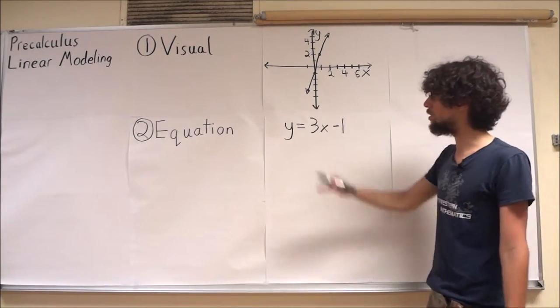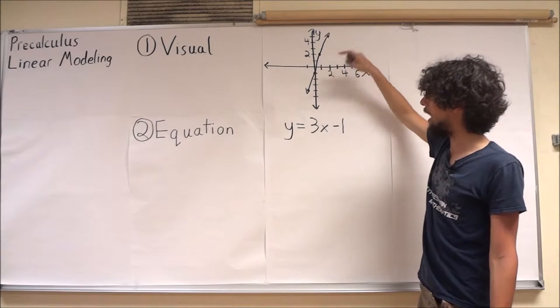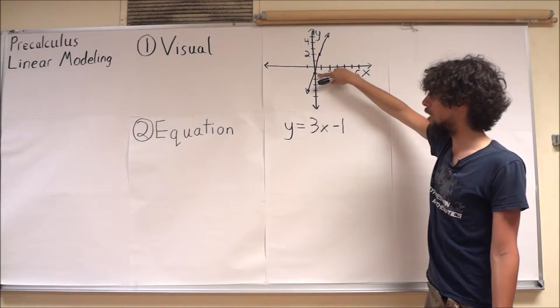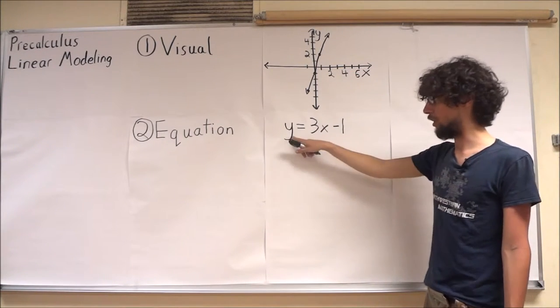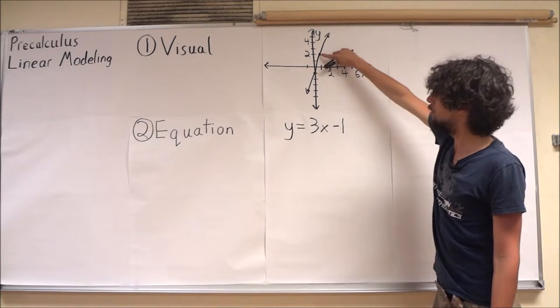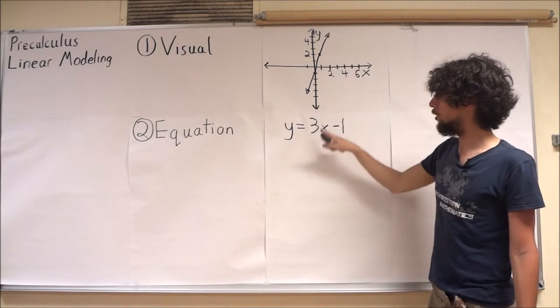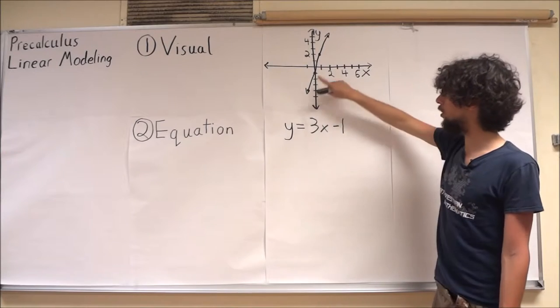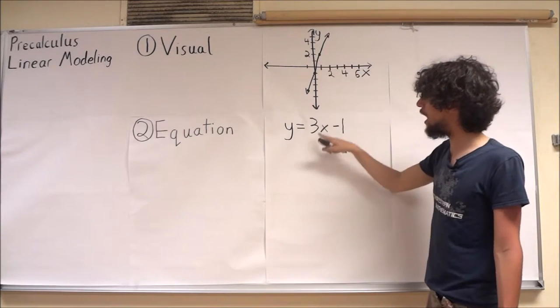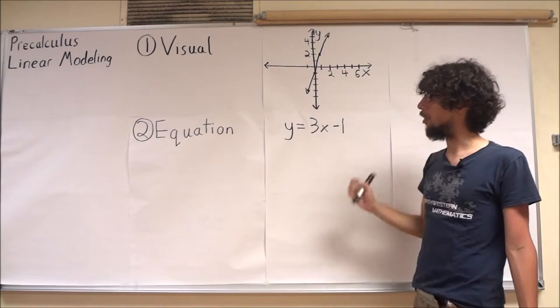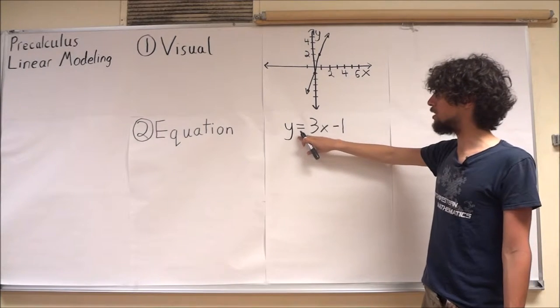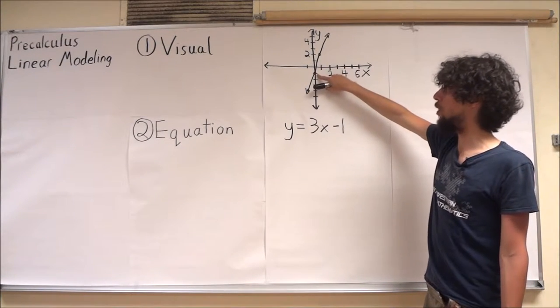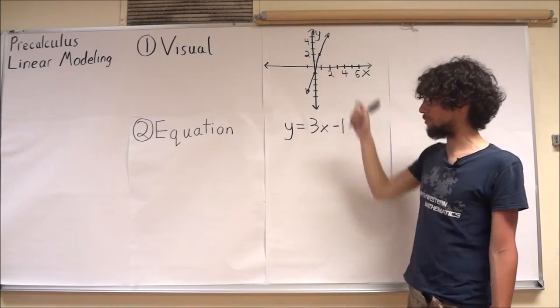Let's make sure that this works with the points that I've plotted here. I have zero comma negative one, which certainly works. I have one comma two, which also works. And I have two comma five, which also works. So this equation is true when I plug in this point, or this point, or this point.